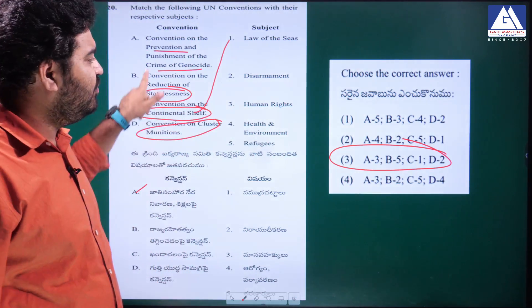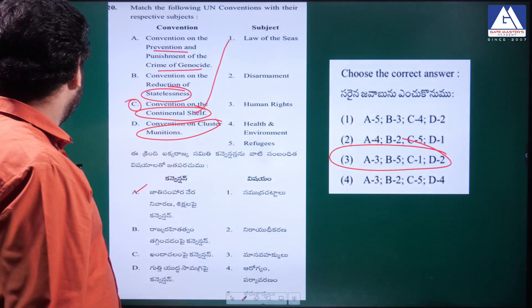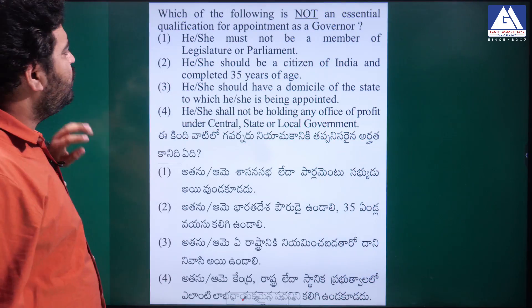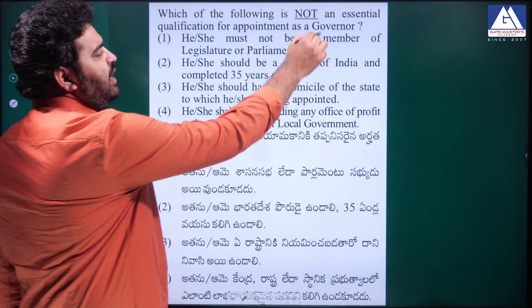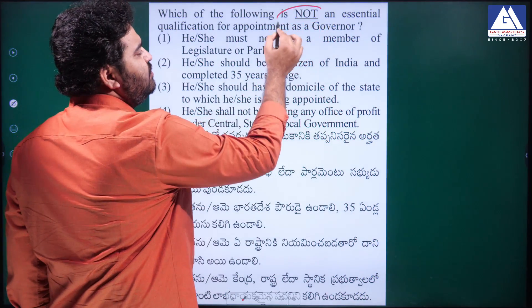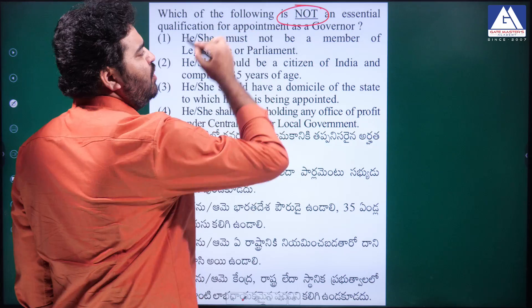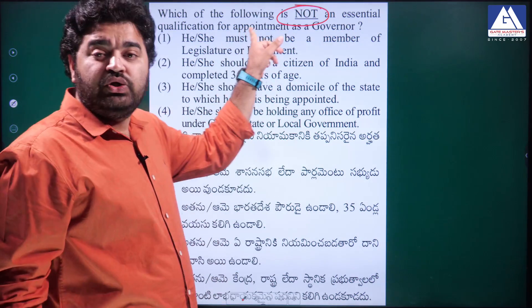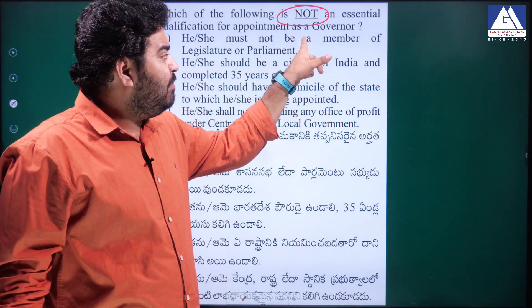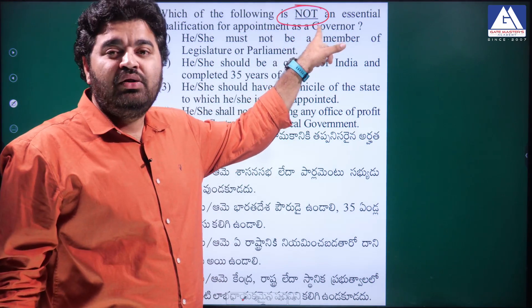This is how you follow the elimination method for all types of questions. Focus on the intention of the question and use whatever knowledge you have to eliminate wrong options rather than trying to know everything perfectly.